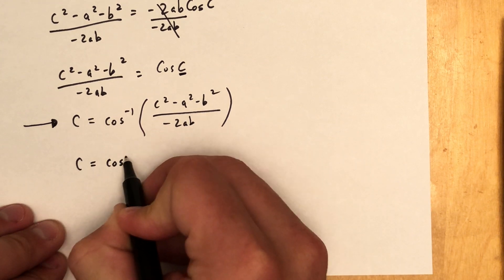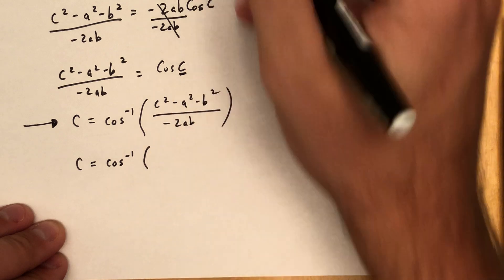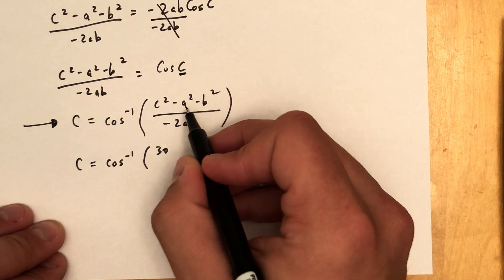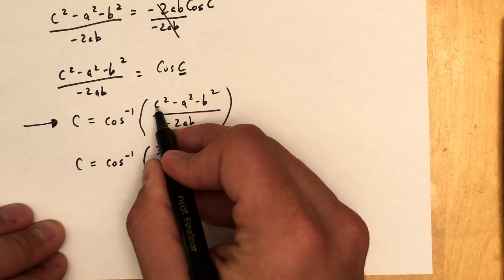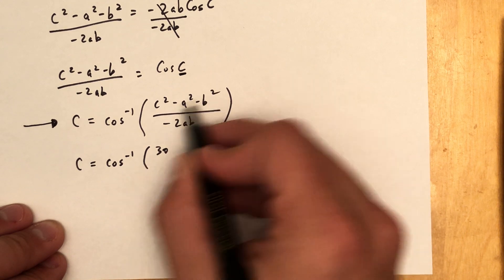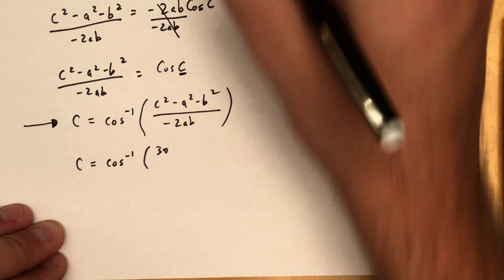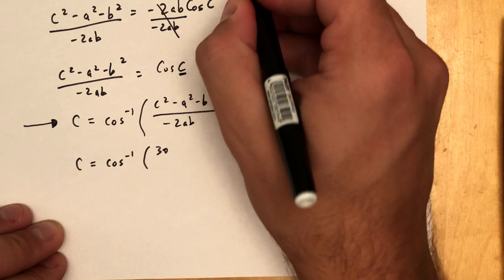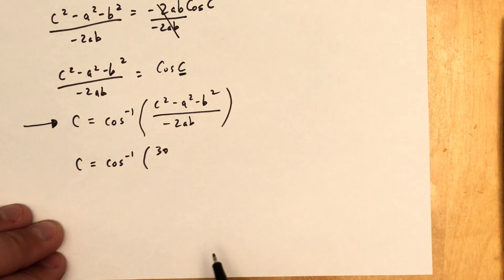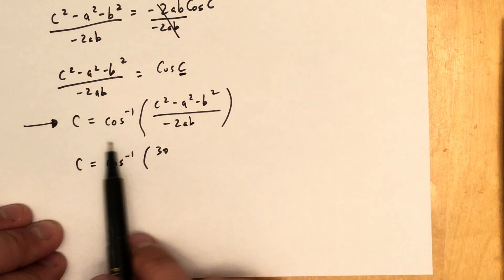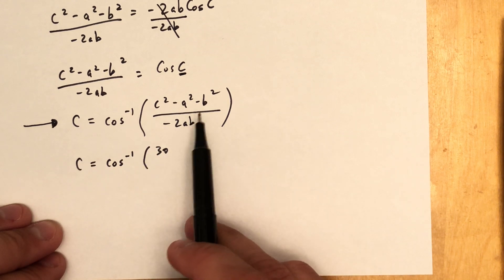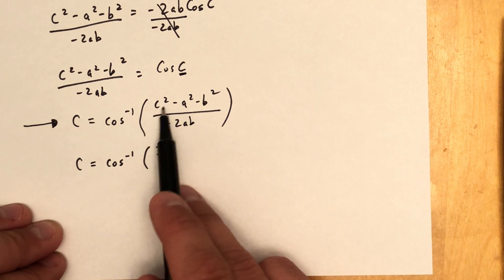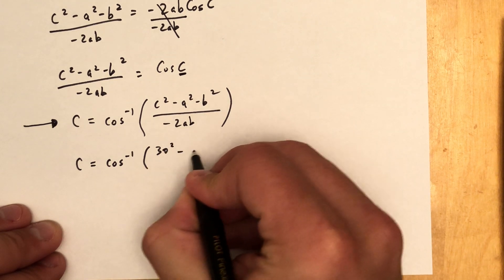Now plug in the values. C is opposite the angle you're solving for — this matters. Side C is 30. A and B can be in either order since A squared and B squared are both subtracted and both appear in the denominator, but C cannot be mixed up. A squared is 18 squared, B squared is 22 squared, all divided by negative 2 times 18 times 22. C is the lone value that must be correct.